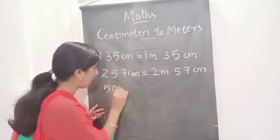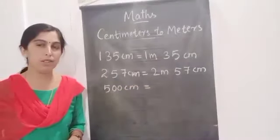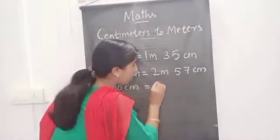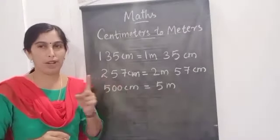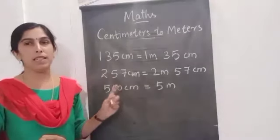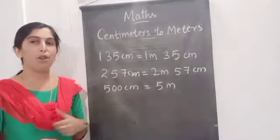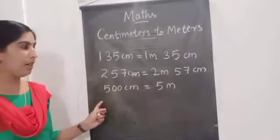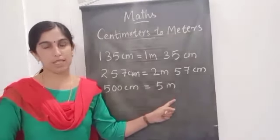Five hundred centimeters is equal to how many meters? Five meters. See: 100 centimeters is equal to 1 meter. If it is 200, two meters. 300 centimeters — three meters. 400 centimeters — four meters. 500 centimeters — five meters. 600 — six meters.